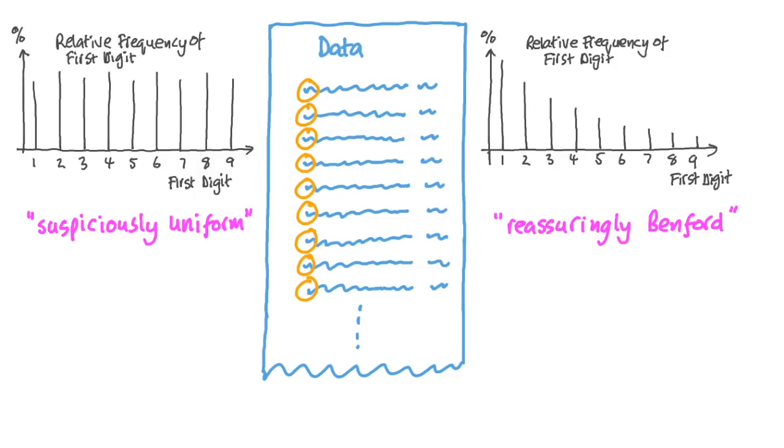If you find something very different, maybe someone has been putting in false claims using a more uniform distribution of first digit numbers. It could be that there's another reason, like certain rules about what people can claim expenses for, or limits on the amount of expenses, or even an error in the accounting software, but it's a very useful flag of the unexpected.